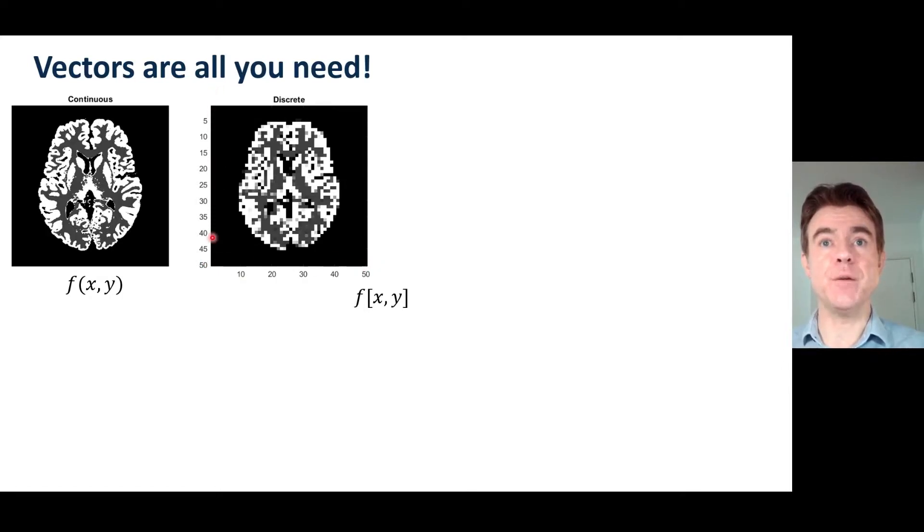So these are now integer values of x and y and we can have an amplitude corresponding to the value of the pixel in each one of those locations. This is now a discrete 2D function.